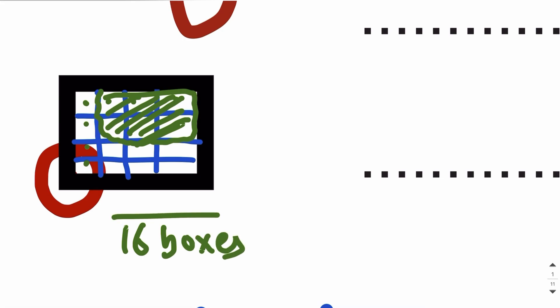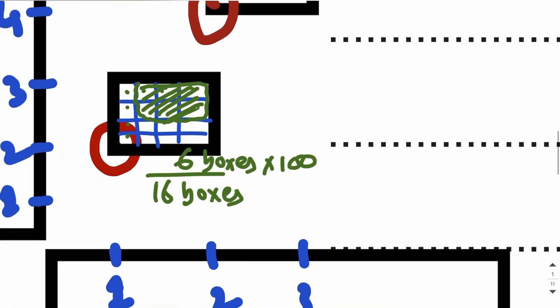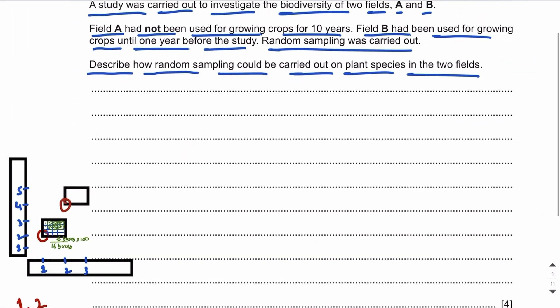Percentage cover is defined as the percentage of the quadrat covered by a particular plant species. For this we use a grid quadrat, which has multiple small boxes. For example, if a plant species covers six boxes out of 16 in a 4×4 grid quadrat, we calculate: 6 divided by 16 multiplied by 100 to get the percentage cover. We can also convert this into a Braun-Blanquet scale reading. This is how we carry out random sampling.